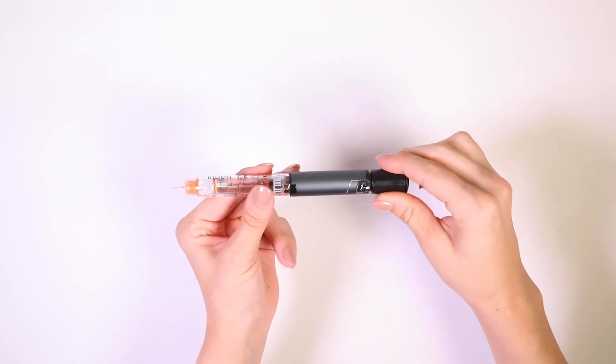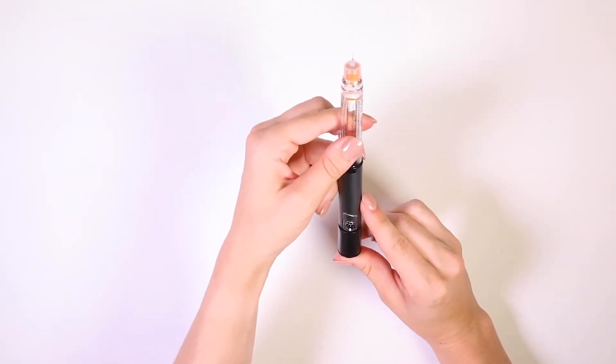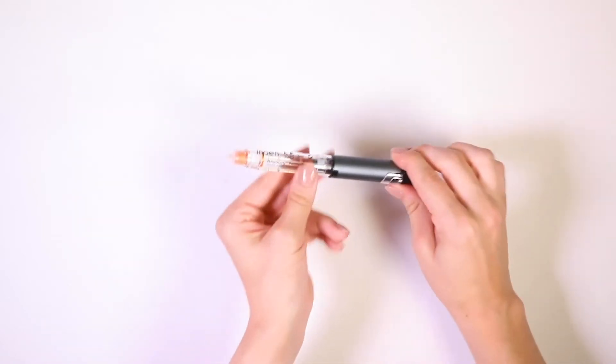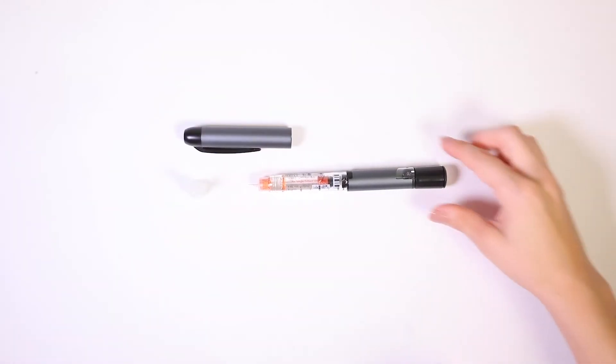To prime the InPen, turn the knob until the window shows two, then hold the InPen with the needle pointing up. Press the button until the window shows zero. Repeat until insulin comes out of the needle.